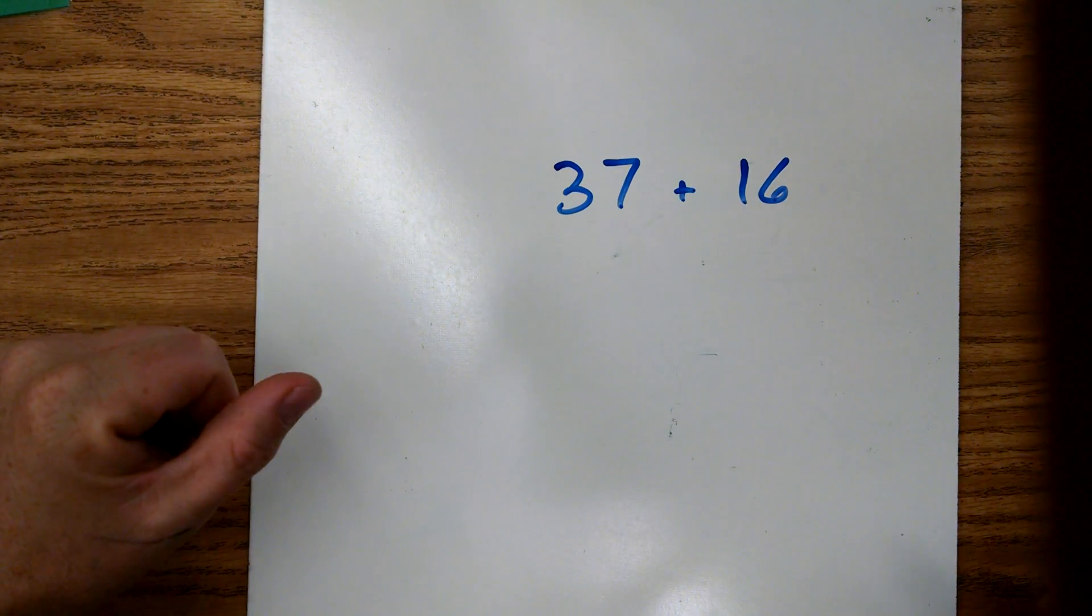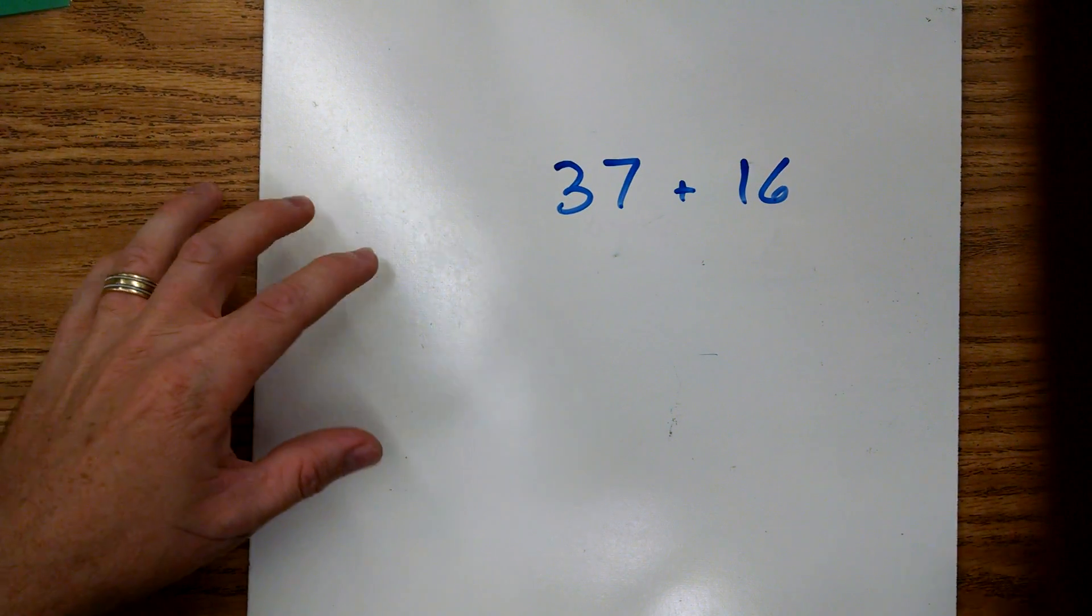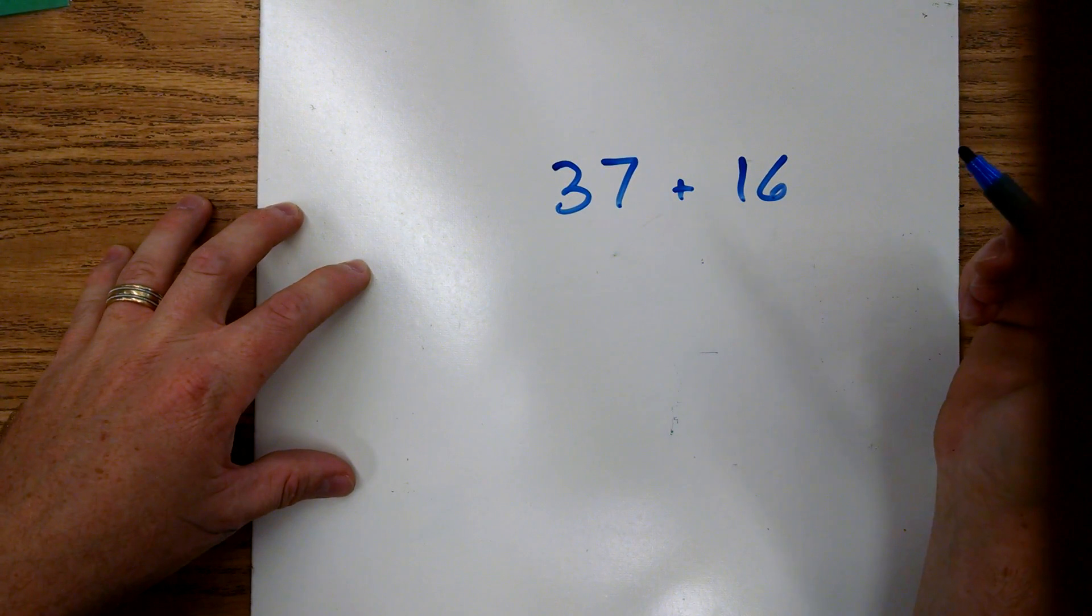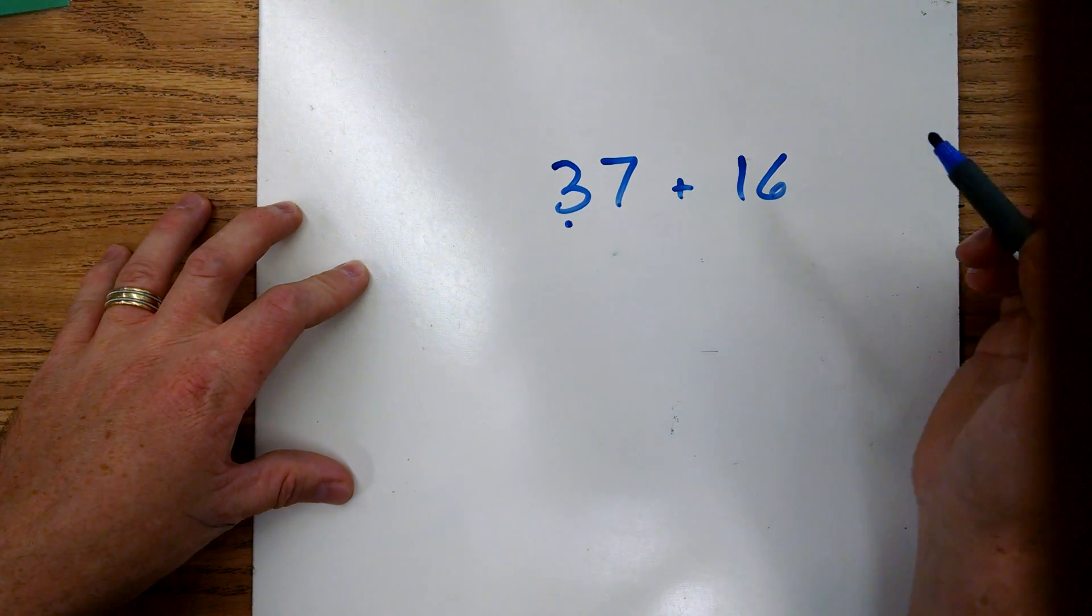Hey guys, this is number three in a series of two-digit addition strategies videos. Today we're going to be using a different style of decomposing. This one, all we're going to do is look at our places and add our places up and then recompose.